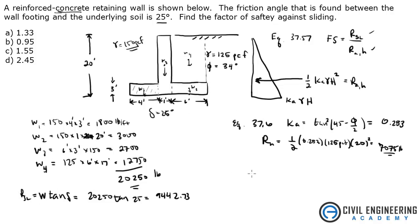Okay, so now we can find the factor of safety now that we've got everything, which is equal to 9442.73 divided by 7075. And that comes out to be 1.33, which is answer A.